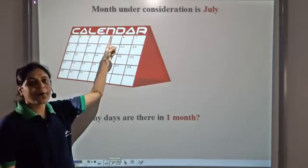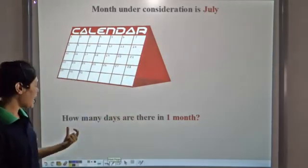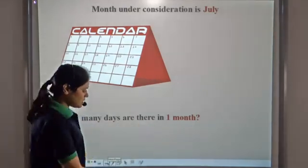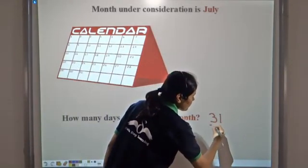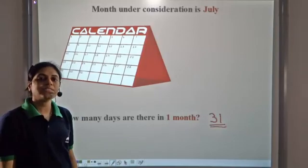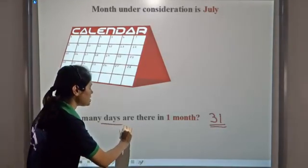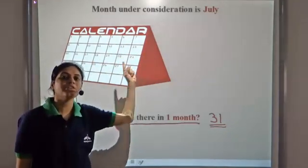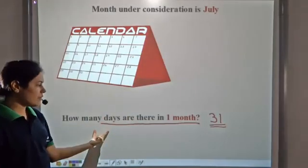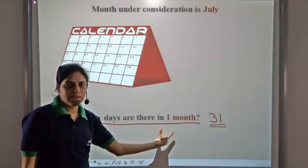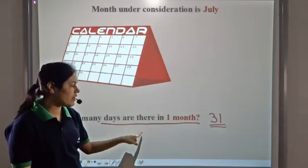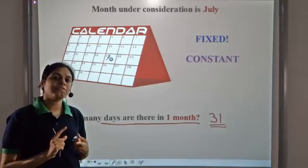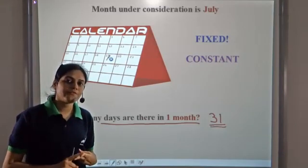Now if I tell you that the month under consideration is July and my question remains the same — how many days are there in one month? — then it will be thirty-one. Here, days in one month becomes a constant because we are talking about a specific month, July. So the same quantity, days in a month, was a variable in the earlier case whereas it is a constant in this case. The same thing can be a variable or a constant in different situations.